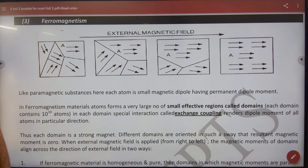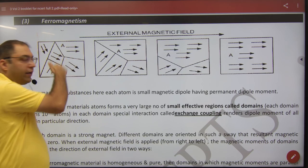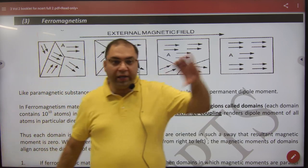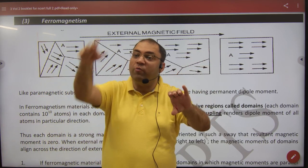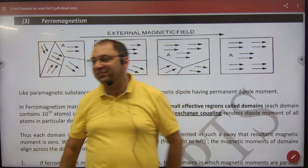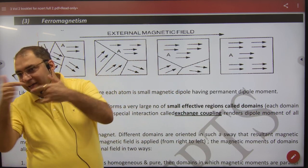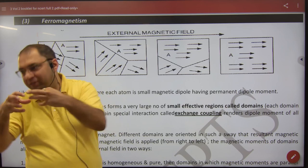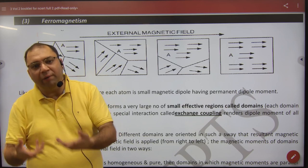In that domain, there are millions of crores of atoms, but their behavior is like this: if all dipole moments are like this, the next domain's dipole moment is like this, the next dipole moment is like this. So overall, millions of dipole moments are aligned within each domain.